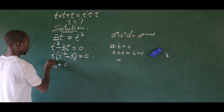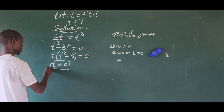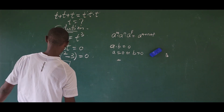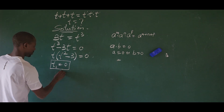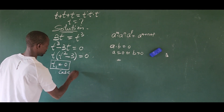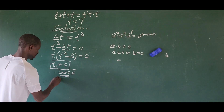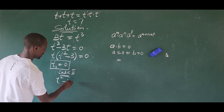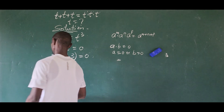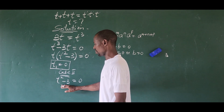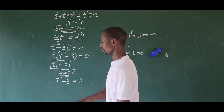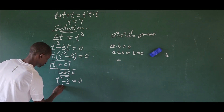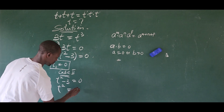Applying that rule, our first solution is t equals zero — this is t₁, the first value satisfying the equation. For case two, we have t squared minus three equals zero.